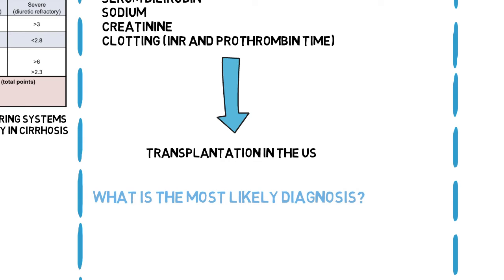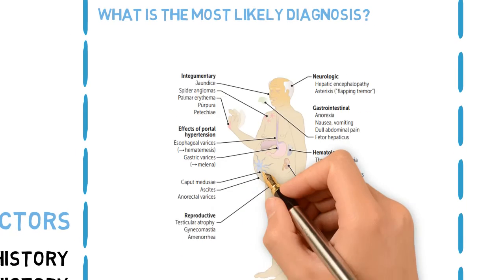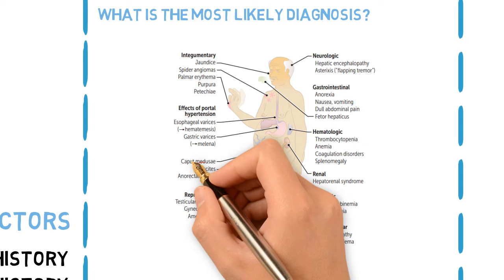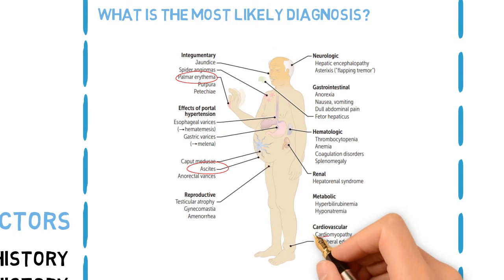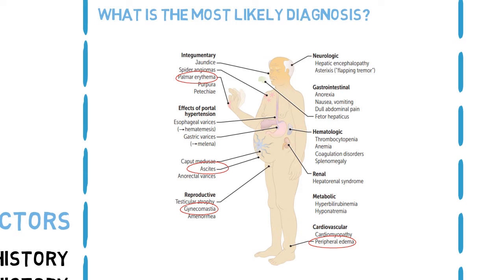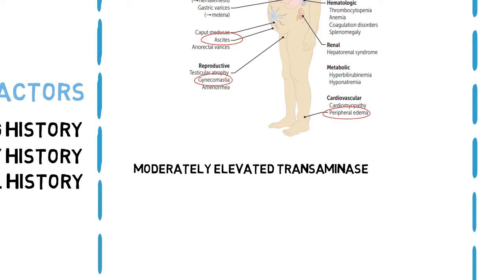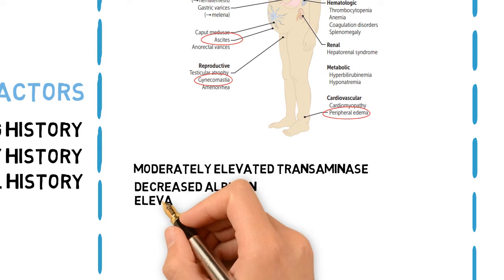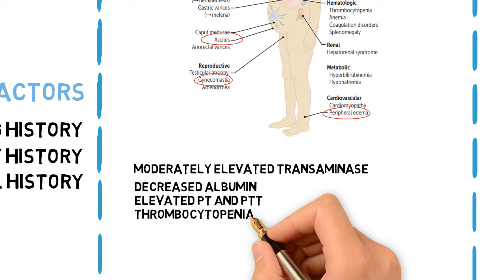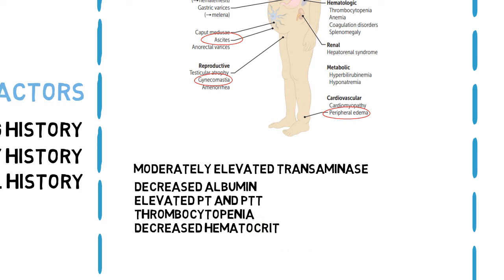The most likely diagnosis is alcoholic cirrhosis of the liver. Findings include ascites, palmar erythema, lower extremity edema, and gynecomastia, suggesting liver failure. The moderately elevated transaminase levels suggest a chronic process, as loss of large numbers of hepatocytes limits the dramatic elevations seen in acute hepatic pathologies. Further indicators of chronicity include decreased albumin, elevated PT and PTT, thrombocytopenia, and decreased hematocrit.